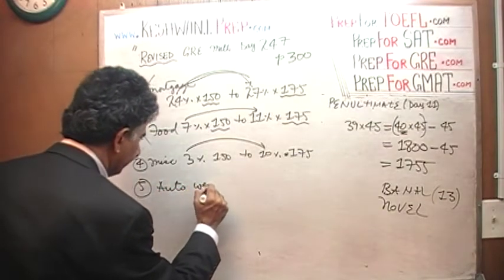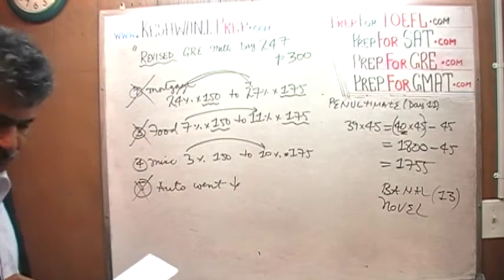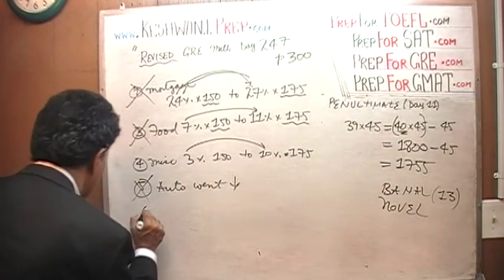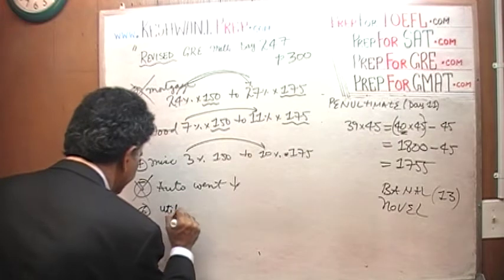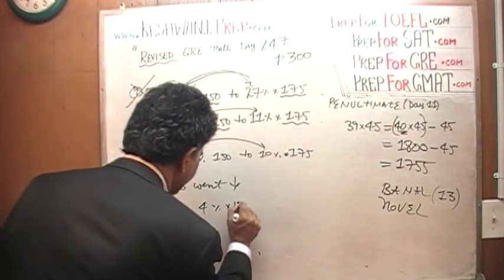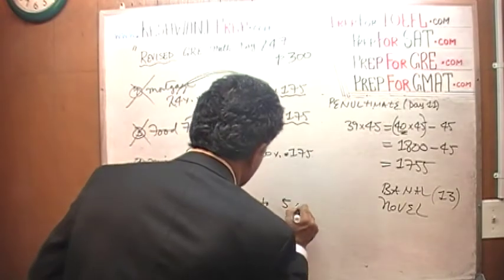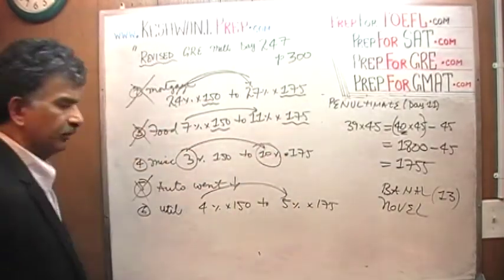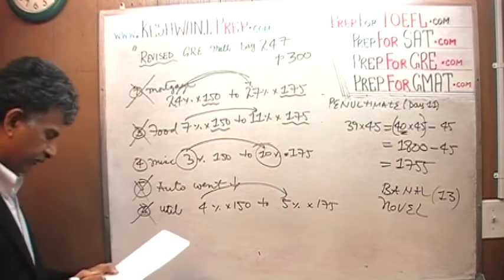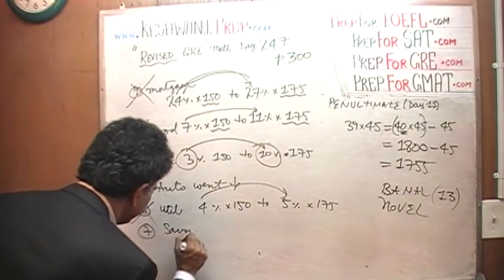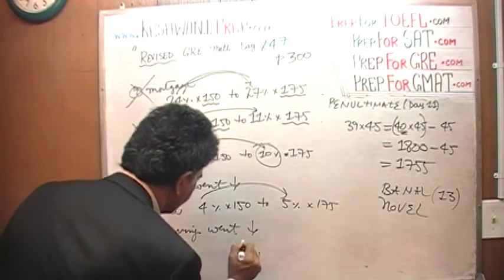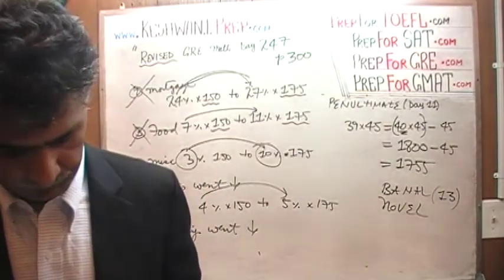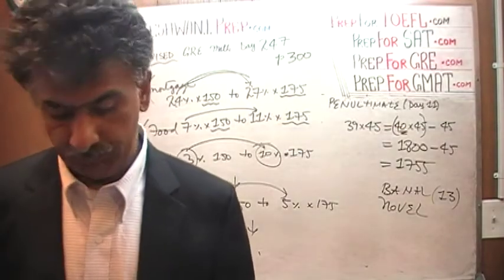Auto. Auto actually went down. So that's not it. If you look at the graph of the auto, it actually went down. So that's not it. Utilities. Utilities was 4% of 150 to 5% of 175. So that's an increase of only 1%. Here we see an increase of 7% from 3% to 10%. So that rules out utilities. And finally, savings actually went down. So that's not it.